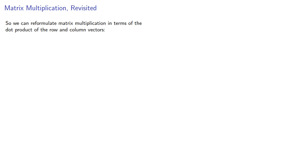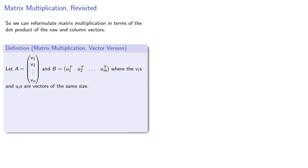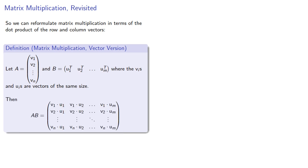Suppose we take our matrix A to be a matrix of row vectors, and our matrix B to be the matrix of column vectors. We'll assume that the V's and the U's are vectors of the same size, otherwise we can't find the dot product. Then we can express the product AB as the matrix of dot products.